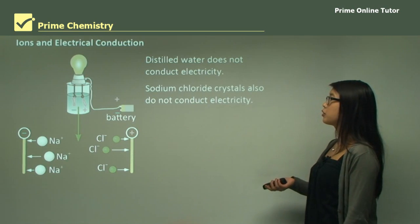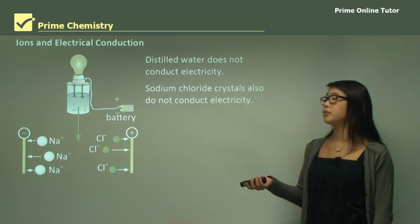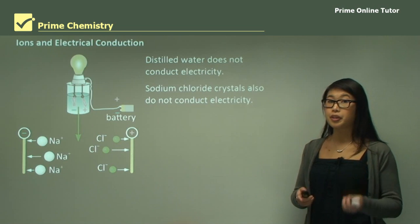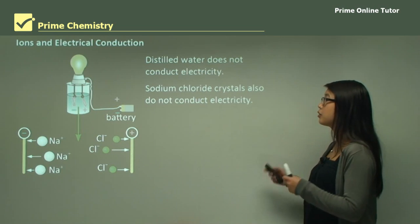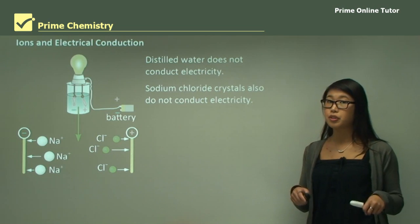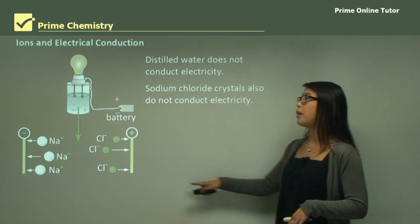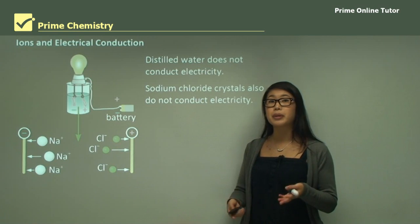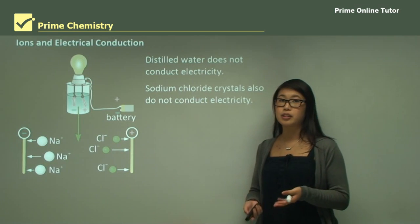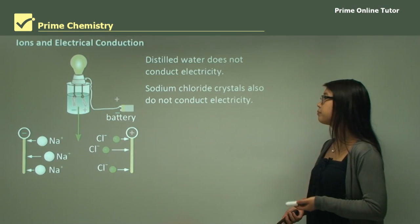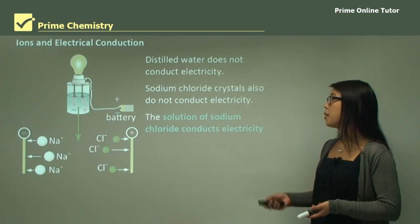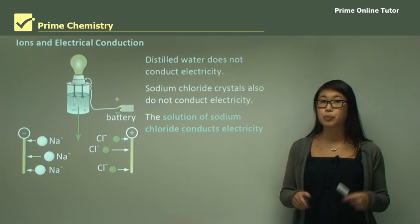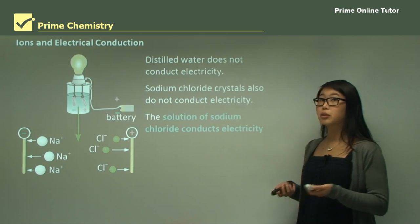If we had sodium chloride crystals on their own and put electrodes on them, the same thing would happen — the light would not turn on, indicating there is no electrical current flowing.